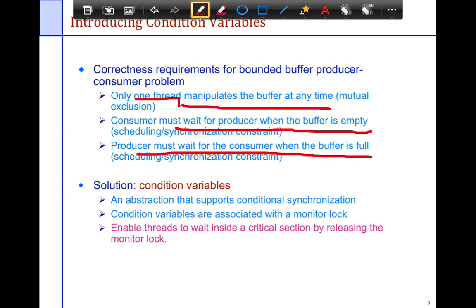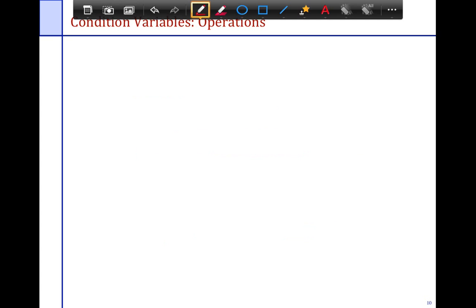So the solution to both these problems is conditional variables. It's an abstraction that supports conditional synchronization. So conditional variables are normally associated with the monitor lock. And each thread needs to wait inside a critical section by releasing the monitor lock. Okay, so you can't hold the lock, you've got to release it, and you've got to wait until the condition that you're waiting on is satisfied.